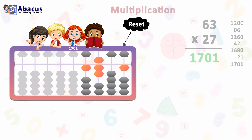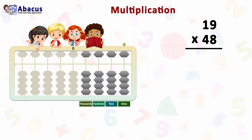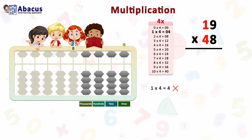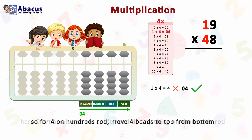Let's multiply 19 by 48. Same as before, we use the first four rods from the right side: ones, tens, hundreds, and thousands. The first step is 1 times 4 equals 4, but as per the Zero Rule, the correct representation is 04. Set 04 from the thousands rod. Zero has no value, so for 4 on the hundreds rod, move four beads to the top from the bottom. After the first step, we have 400.